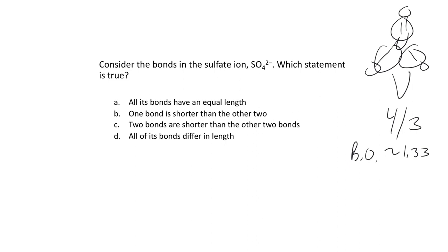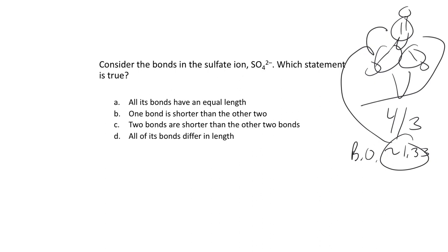For NO2⁻ versus NO3⁻, which bond is shorter? It comes down to looking at Lewis structures and evaluating bond orders. All the bonds in nitrate are actually the same distance — not one shorter than the other two — at an order of about four-thirds. You can then compare that to something with bond order three-halves, two, or one to predict length trends.